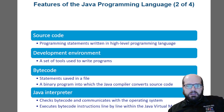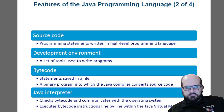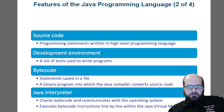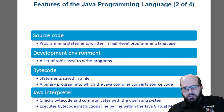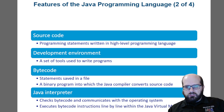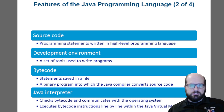The development environment includes a set of tools that allows you to write programs. Bytecode statements are saved in a file — it's a binary program into which the Java compiler converts source code. The Java interpreter then checks the bytecode and communicates with the operating system, executing bytecode instructions line by line within the Java virtual machine.